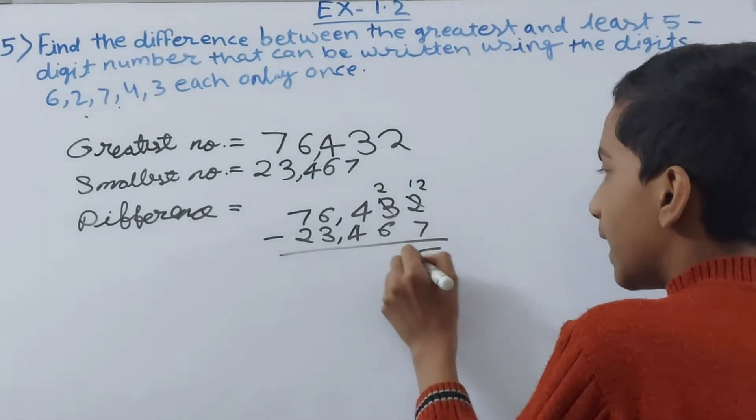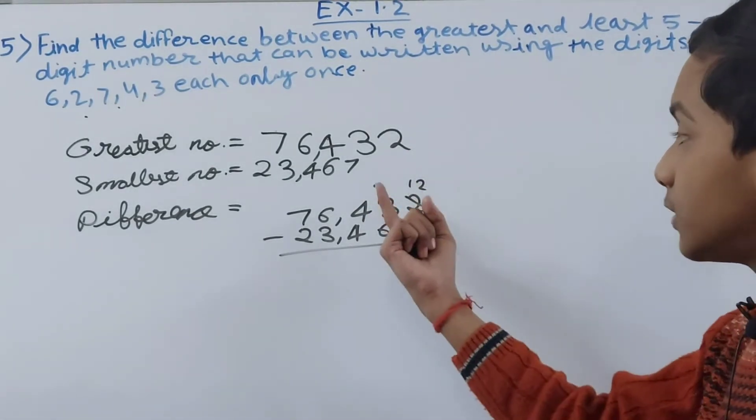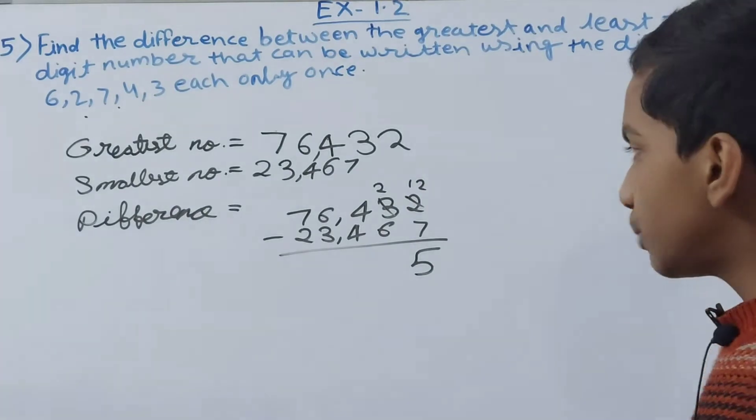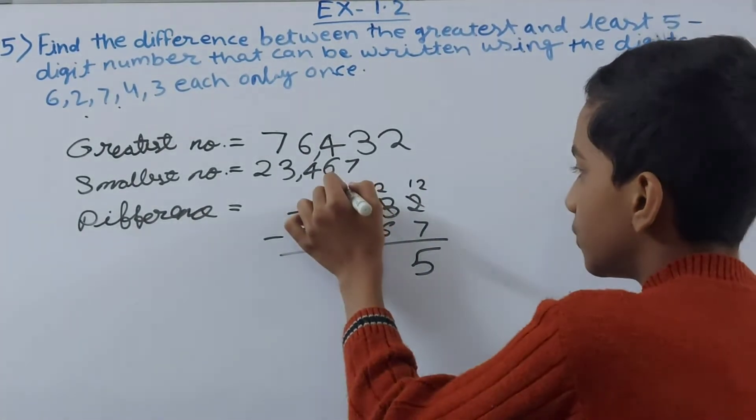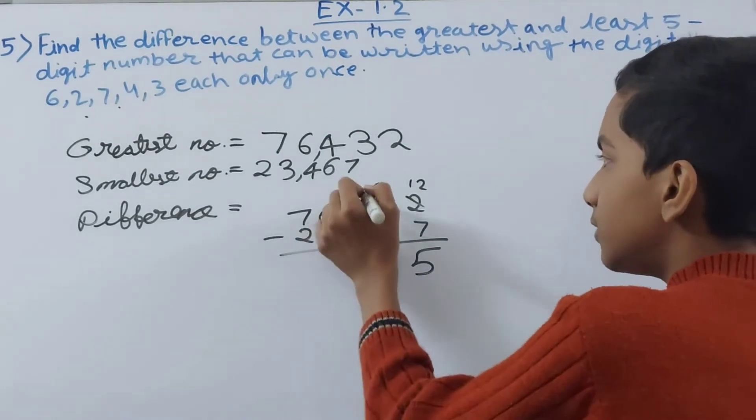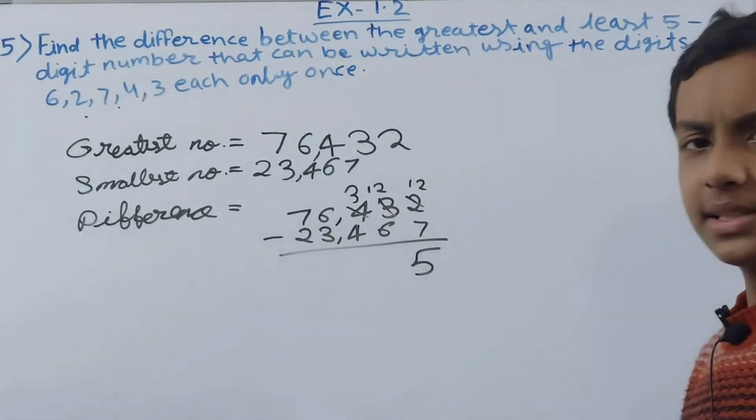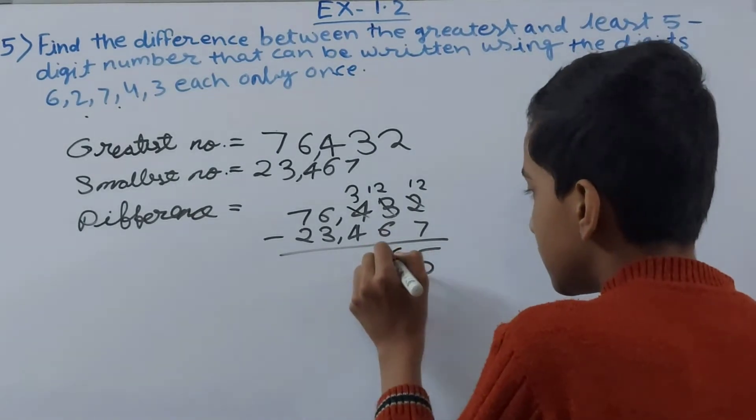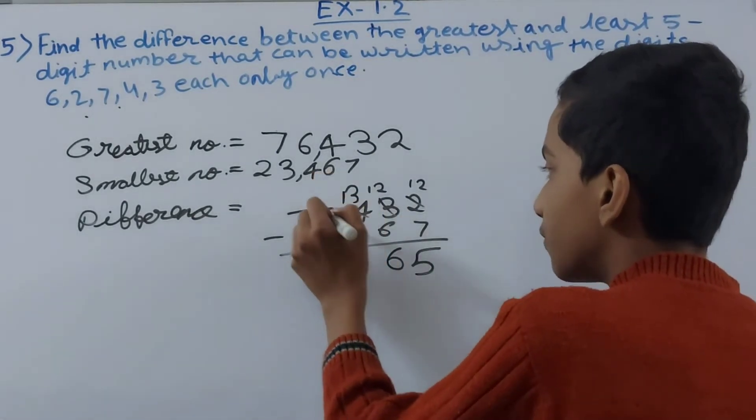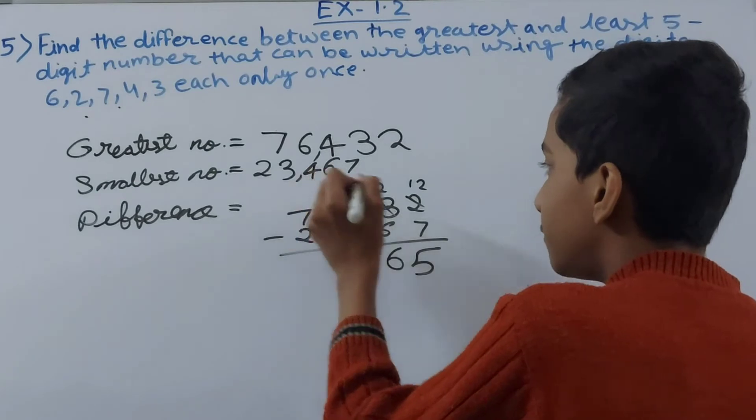Now 2 minus 6, we again cannot do, we need to borrow 1 from this 4. So 4 turns to 3, 2 will turn to 12 once again. Now 12 minus 6, that will give us 6. 3 we need to borrow 1 from 6, 6 will become 5, 3 becomes 13. 13 minus 4 is 9.